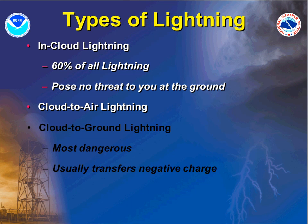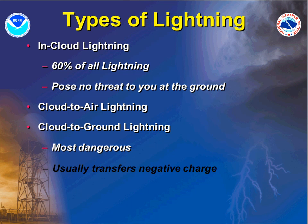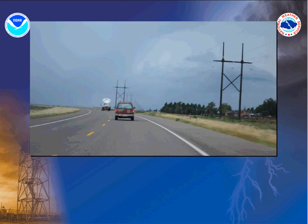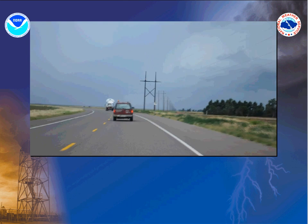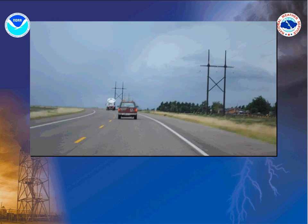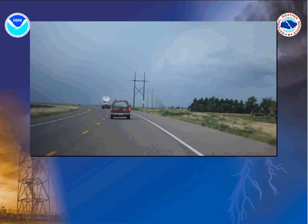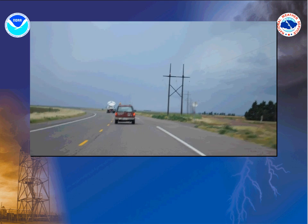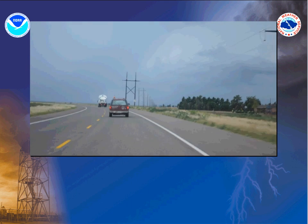Another type of lightning is cloud to air, where lightning will actually leave the cloud and strike the air around the storm. The third and final type is cloud to ground lightning, which is the most dangerous of all. Cloud to ground strikes transfer a large amount of electrical charge to the Earth's surface and can very easily injure and kill people. While negative cloud to ground strikes represent a majority of total strikes, there are also positively charged strikes. Positive lightning often comes from the anvil of a thunderstorm and strikes far away from the actual storm. These strikes usually contain the most charge, making them even more dangerous. In this video, you can see how lightning strikes away from the thunderstorm.